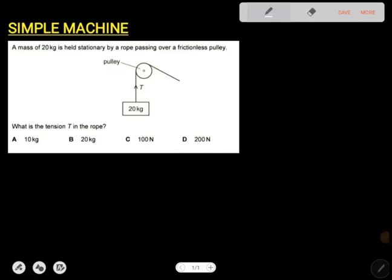Alright, so how can we answer this question? It says a mass of 20 kg is held stationary by a rope passing over a frictionless pulley. What is the tension in the rope?